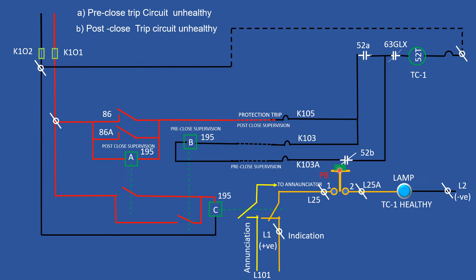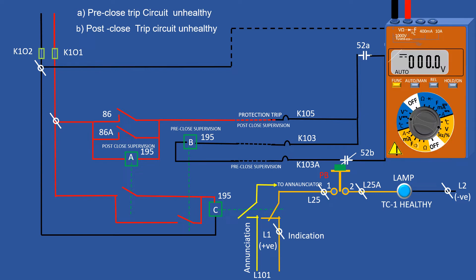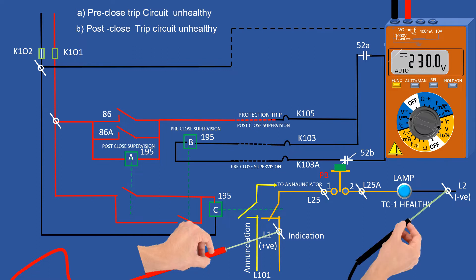Trip circuit unhealthy due to fault at indication circuit. Now we shall go through the process of checking. First of all, we check DC input. We shall take a suitable multimeter, keeping selector knob at DC volt position. Red hand lead of multimeter is kept at L1 DC positive and black hand lead at L2 DC negative. Multimeter reading will show 230 volt DC, that is DC is okay.